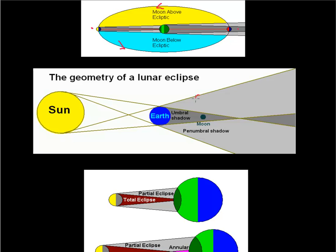In the penumbra we get partial light. If the moon were right at the edge, it would get almost 100% light — above that line it can see the entire sun. The bottom part can see almost the entire sun, just not the very bottom section, so it's pretty well lit. As the moon moves into the umbra we get a total eclipse. What we're going to get this time is going to be a partial.